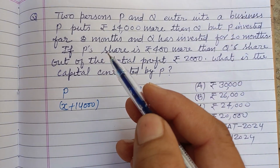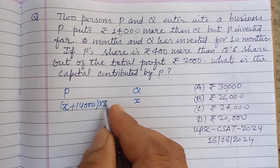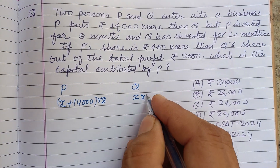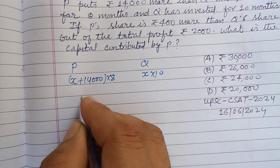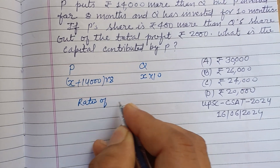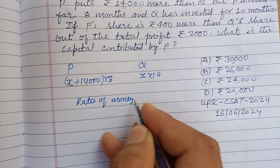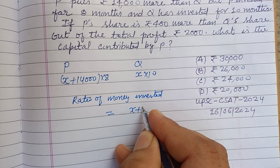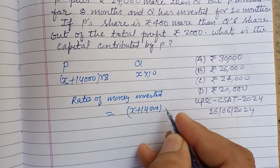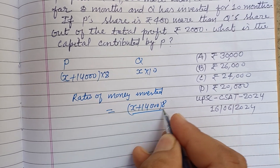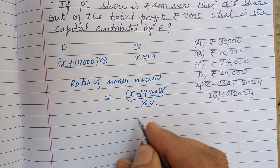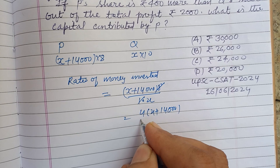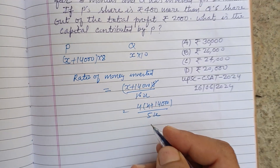P invested for 8 months, so multiplied by 8. Q invested for 10 months, so multiplied by 10. The ratio of money invested equals (x + 14,000) × 8 divided by 10x, which simplifies to (4x + 14,000) upon 5x.